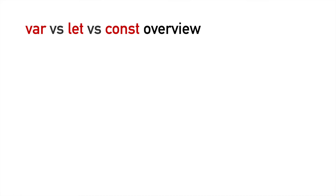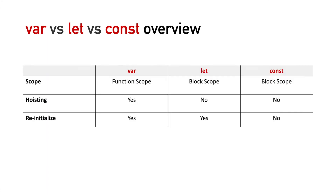Now that we have a basic understanding of concepts related to variables in JavaScript, let's write down all the differences between var, let, and const based on those concepts. In terms of scope, var has functional scope whereas let and const have block scope. Talking about hoisting, hoisting is only possible with var and is not possible with let and const. Lastly, in terms of re-initialization, we can re-initialize var and let, whereas we cannot re-initialize a variable declared with const.